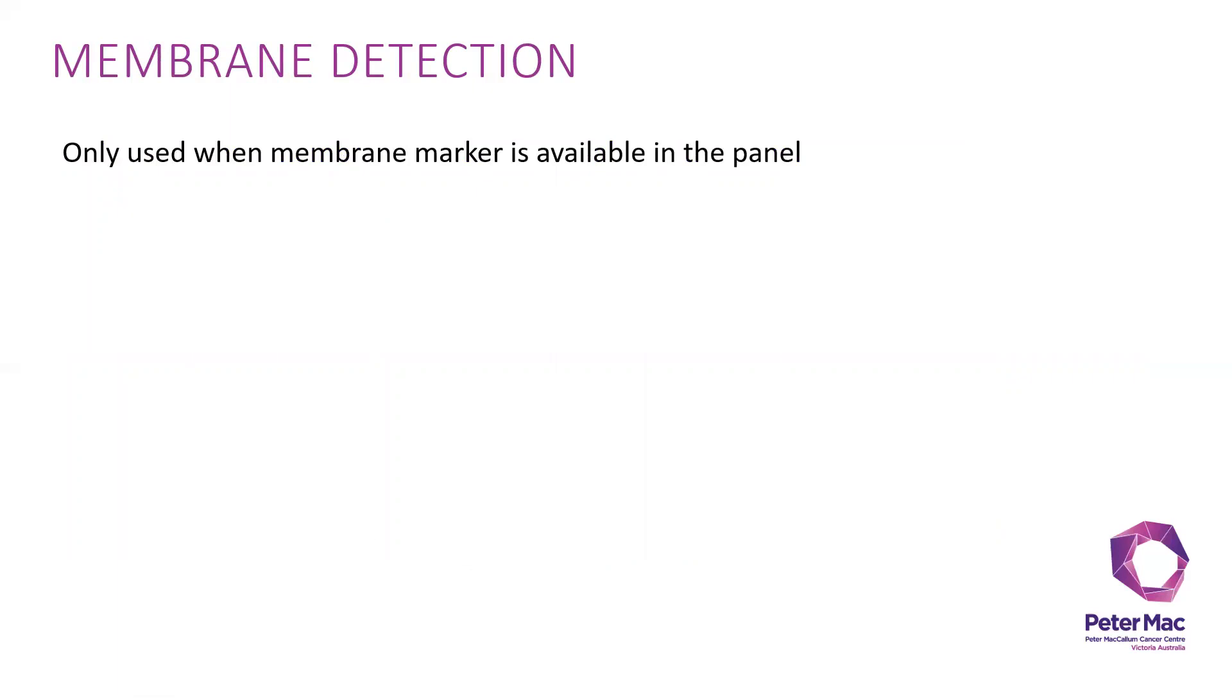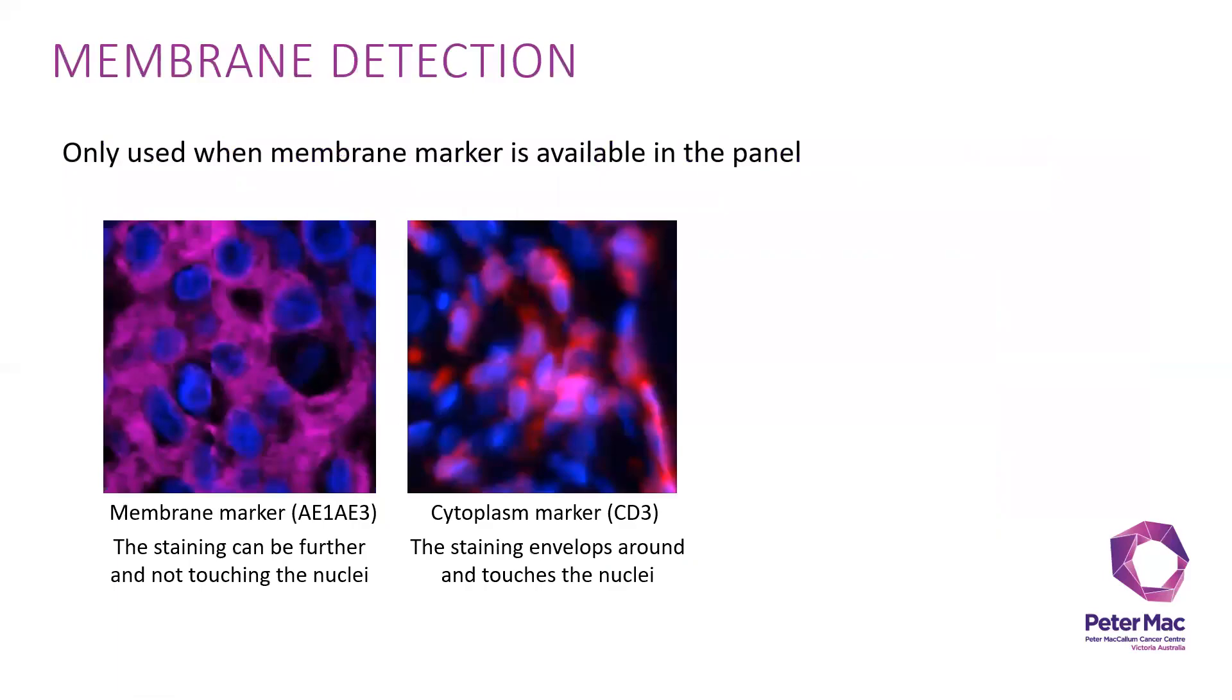Then membrane detection. You only use this when a membrane marker is available in the panel. In HALO, it's a bit different. Membrane marker in here will refer to the staining that is further and not touching the nuclei, as you can see in this particular cell on A1A3 marker. For the cytoplasmic marker, for example CD3, it is a membrane marker, but because the staining envelopes around and touches the nuclei, it is classified as a cytoplasmic marker in HALO.